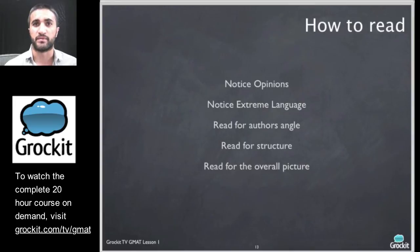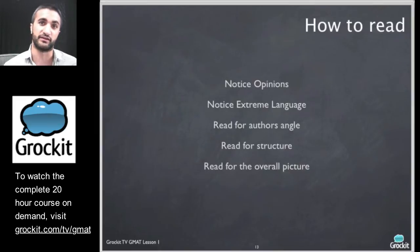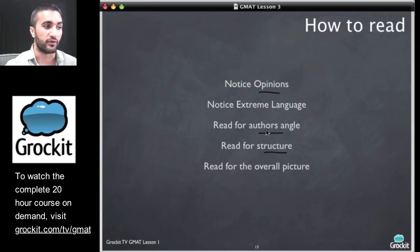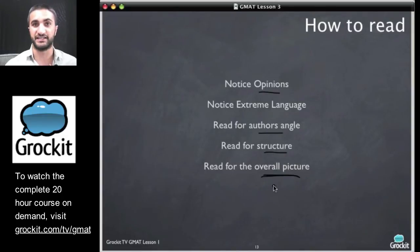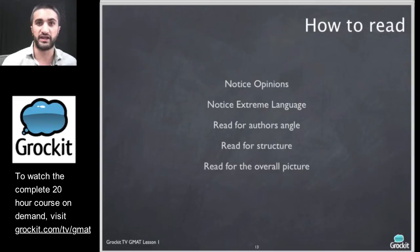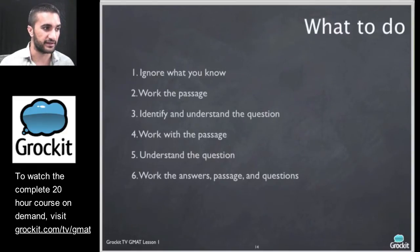We want to read for structure. In the first paragraph they make a point, in the second paragraph they refute the point, and in the third paragraph they make their conclusion. Why are we reading for structure? Because there are questions that relate to that — not because it's inherently important, but because there are GMAT questions about how the passage is put together, around the author's angle, around opinions of people in the passage. And the overall idea of the passage is important because they love main idea questions and primary purpose questions.